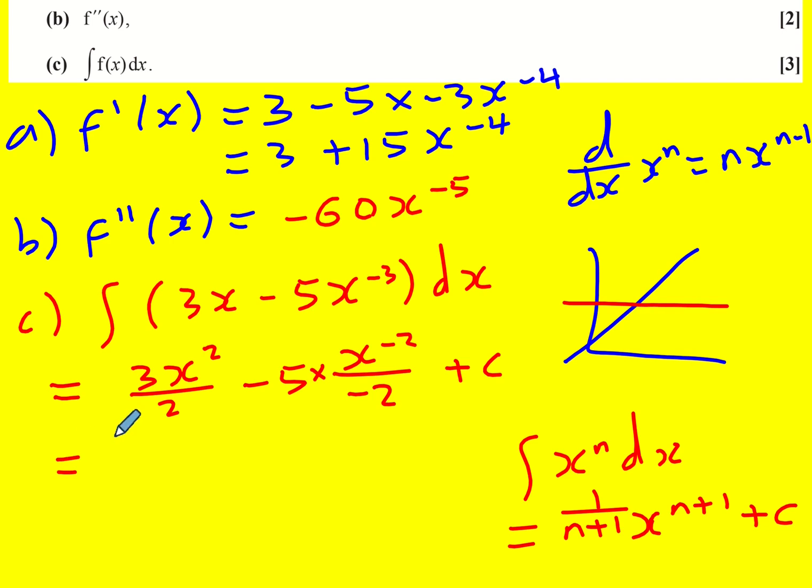I just need to then tidy this up, so 3 over 2x squared, that looks better, and this is going to become plus 5 over 2x to the minus 2 plus c, and I'm going to leave it like that.